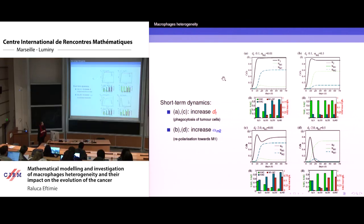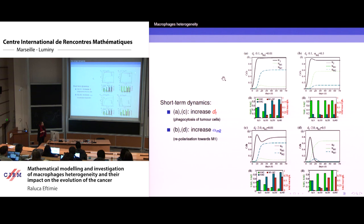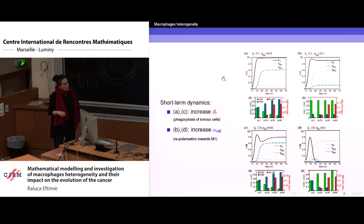Moving horizontally, we increase alpha_M2 — the repolarization rate towards the anti-tumor M1 phenotype. If the phagocytosis rate D_T is very small, you get lots of M1 cells after repolarization but they don't do much in terms of tumor control. To kill the tumor or keep it under control, you need to increase both D_T and the repolarization rate alpha_M2 simultaneously.